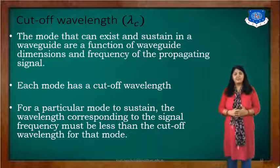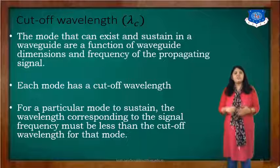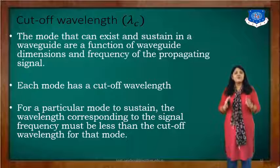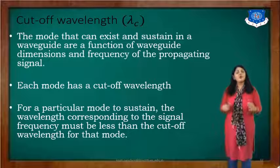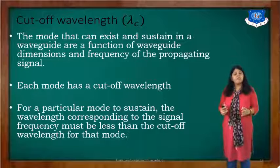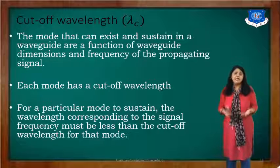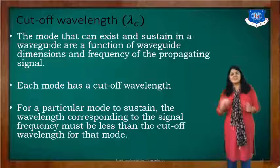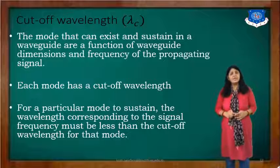The cutoff wavelength is denoted by lambda c. The modes that can exist and sustain in a waveguide are a function of the waveguide dimension and frequency of the propagating signal. Each mode has a cutoff wavelength. For a particular mode to sustain, the wavelength corresponding to the signal frequency must be less than the cutoff wavelength — the minimum wavelength required to pass through the waveguide. That is known as the cutoff wavelength, denoted by lambda c.